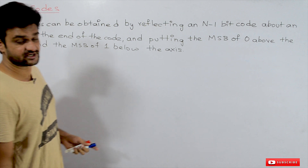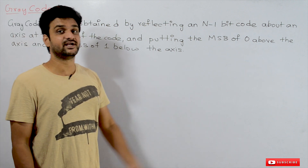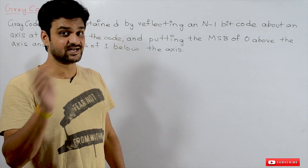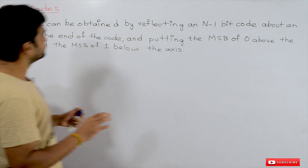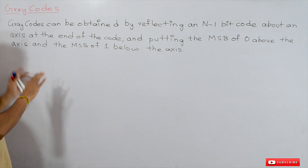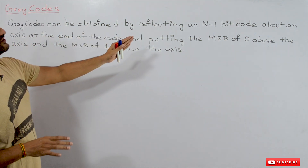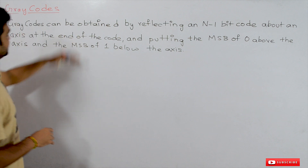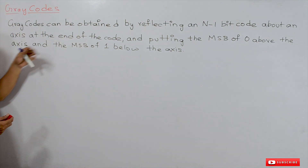Gray codes are also called reflexive codes. They are also called unit distance cyclic codes. We will try to understand what those terms mean by working through the way in which gray codes are obtained.